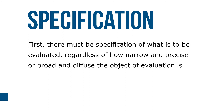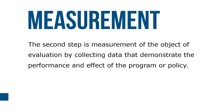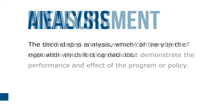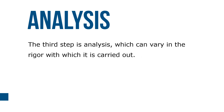Steps to be taken in an evaluation include at least the following: first, there is a specification of what needs to be evaluated, regardless of how narrow and precise or broad and diffuse the object of evaluation is. The second step is measurement, by collecting data that demonstrates the performance and effect of the program or policy. The third step is analysis, which can vary in the rigor to which it's carried out.